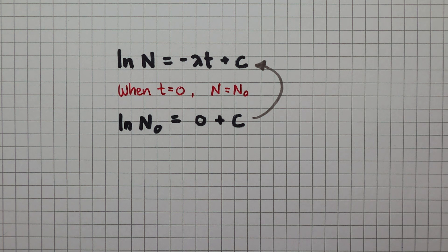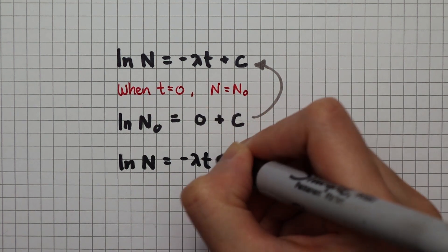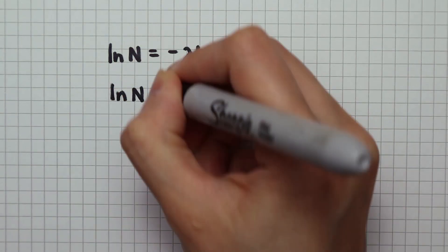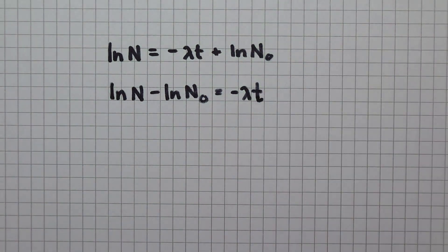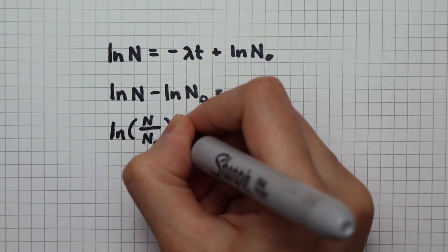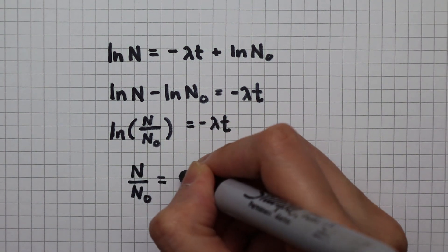Now that we've figured out what the constant is, we can put it back into our original equation. The equation now becomes this. Log identity tells us that subtracting two logs is just the same as dividing one by the other. Taking exponential on both sides, we end up with this.